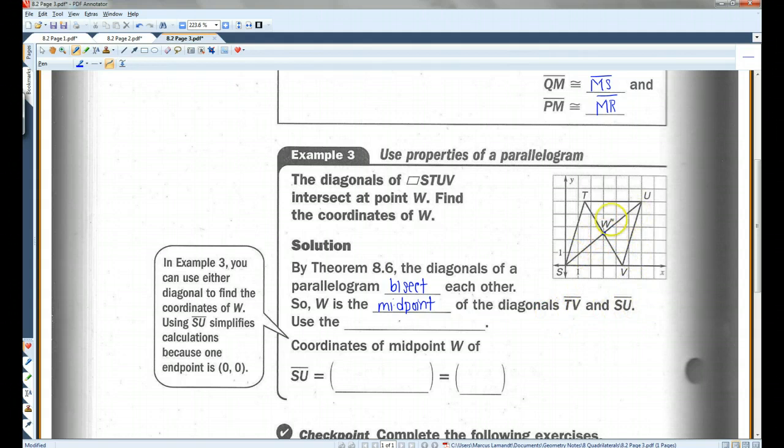If these bisect each other, then W is the midpoint of this segment, oops, and this segment. So, we're going to use the midpoint formula to find W. The coordinates of midpoint W of, it doesn't matter if you use this one or this one, let's just use SU because that's what apparently they want us to use. This is 0, 0. And this, let's see here, 1, 2, 3, 4, 5, 6. 1, 2, 3, 4, 5. So, this is 6, 5.